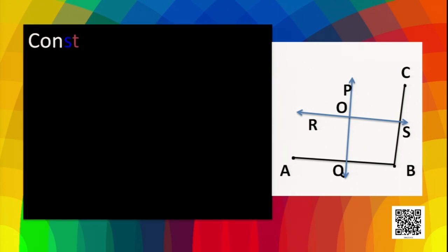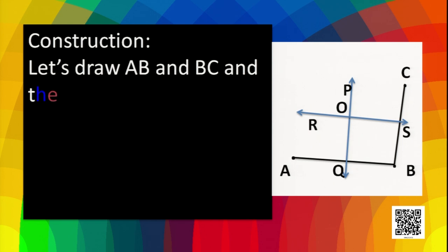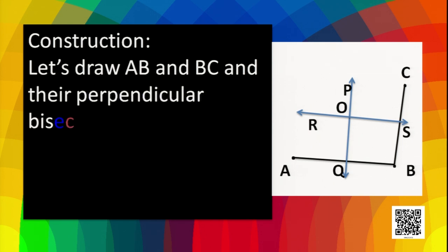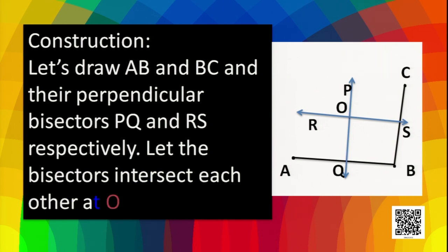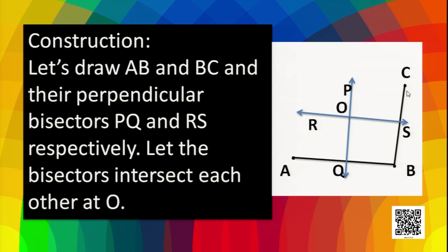We draw line segments AB and BC, and their perpendicular bisectors PQ and RS respectively. Let the bisectors intersect each other at the point O. Now let's start the proof.